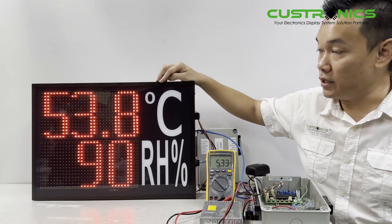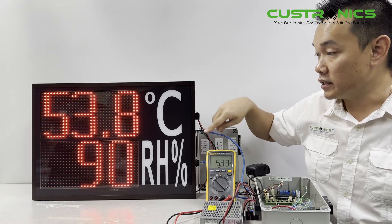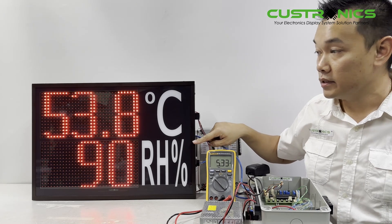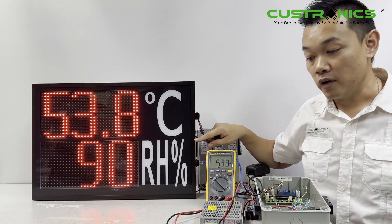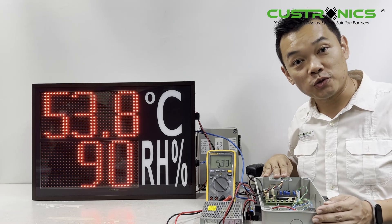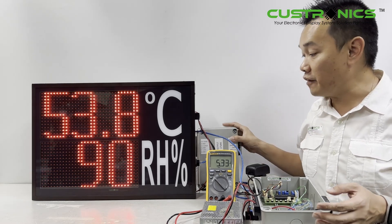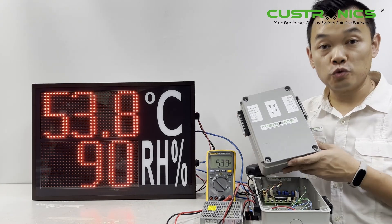This system is basically the same for humidity - the same setting, same method. Of course, this is the 0 to 10 volt display. We also have another version that's 4 to 20 milliamp.